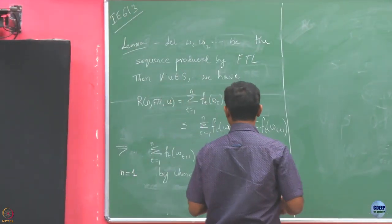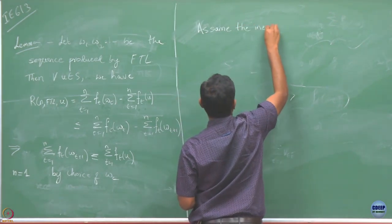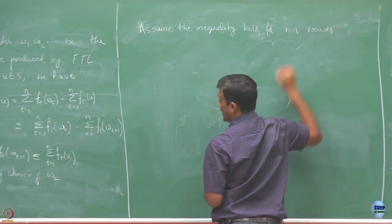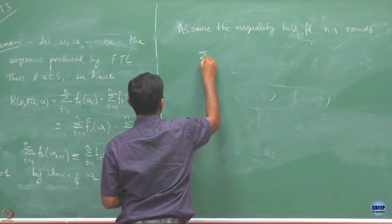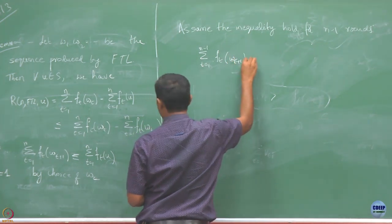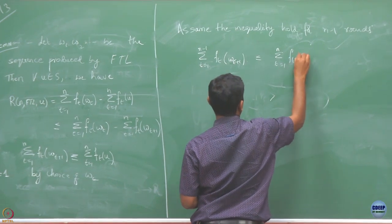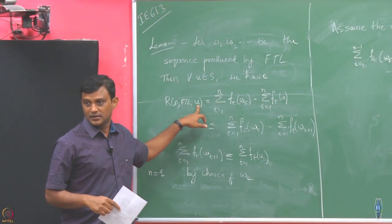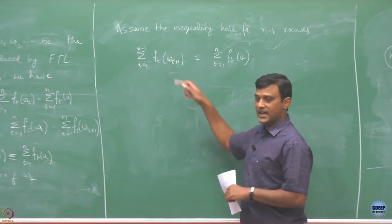Next, assume that this inequality holds for N minus 1 rounds and then we will show it also holds for the nth round. So it is T equals 1 to n minus 1 of F_T at W_{T+1}, plus F at round n equals F of U. Notice that this U is any number in my set S, but fixed from the beginning. Only the W_T's are varying as per your algorithm.